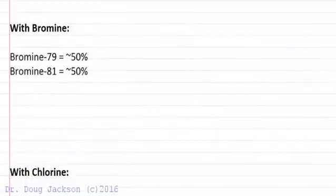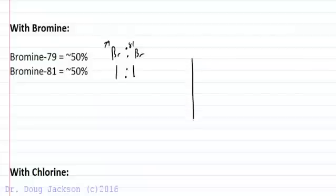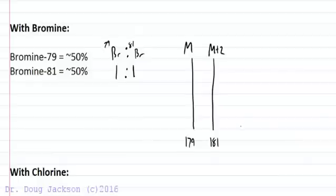With bromine, it's a lot easier to see because bromine-79 is about 50 percent of all bromine. We're going to see a ratio of bromine-79 to bromine-81 of about one to one. In our spectrum, you're going to see a molecular ion, say at 179, and you might have at 181 an M plus 2 peak that is an isotope peak of the molecular ion.